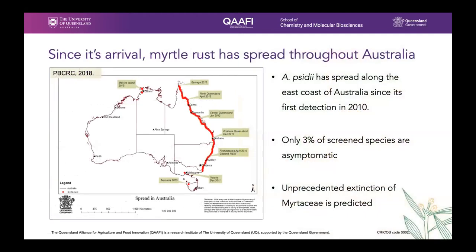In Australia, myrtle rust has been recorded on over 480 species across 57 genera of Myrtaceae, and only 3% of species are asymptomatic. Myrtle rust-related population decline has also been documented, along with localised extinctions of rare and vulnerable species. New research published this year has predicted an unprecedented extinction event of 16 species of native Myrtaceae in a single generation due to myrtle rust. Over 50 species across 50 genera have been flagged as medium to emergency priority for conservation, and myrtle rust is considered a critical threat to Australian and New Zealand biodiversity.